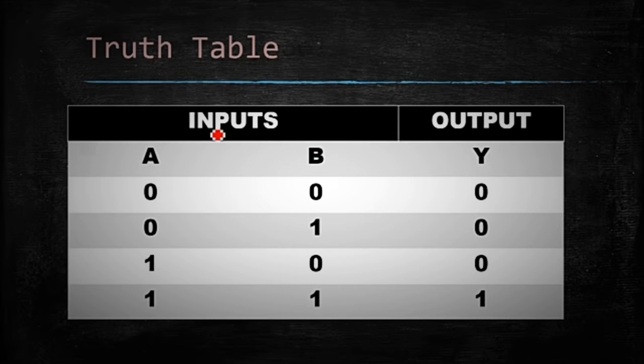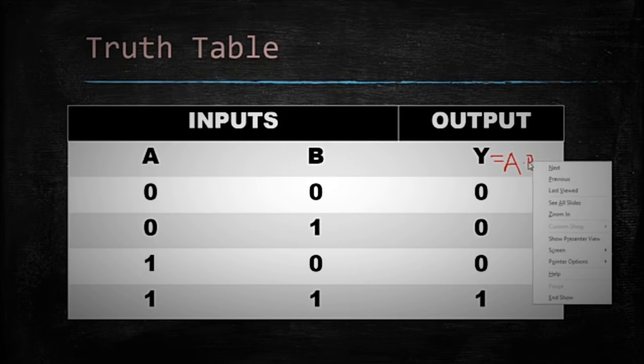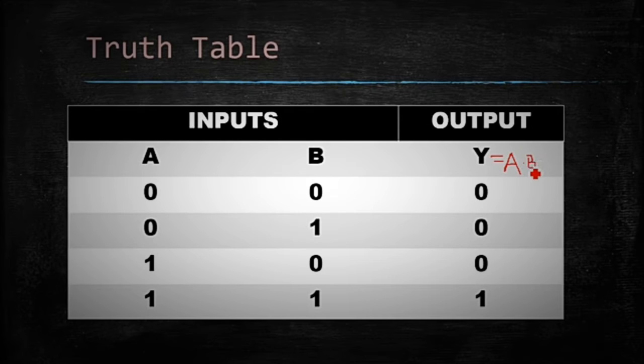Truth table for AND gate is Y equals A dot B. It means multiply of both the symbols. 0 into 0 is 0. 0 into 1 is 0. 1 into 0 is 0. 1 into 1 is 1.